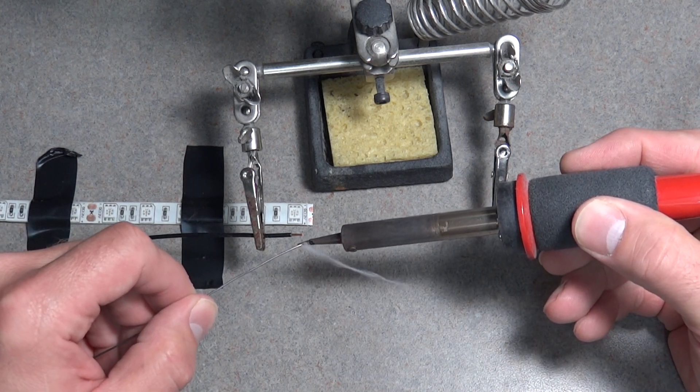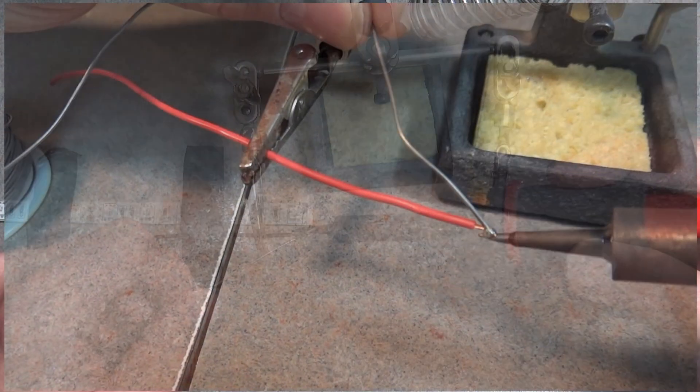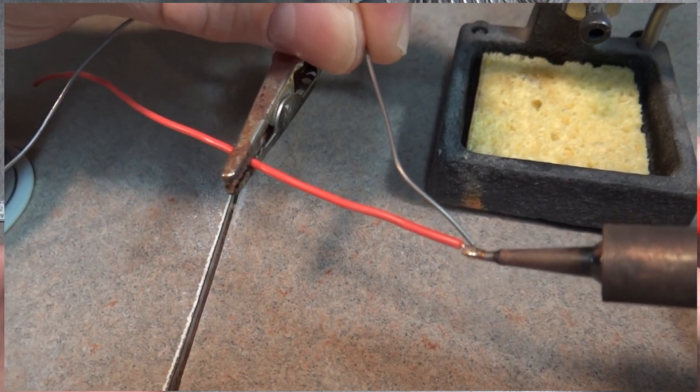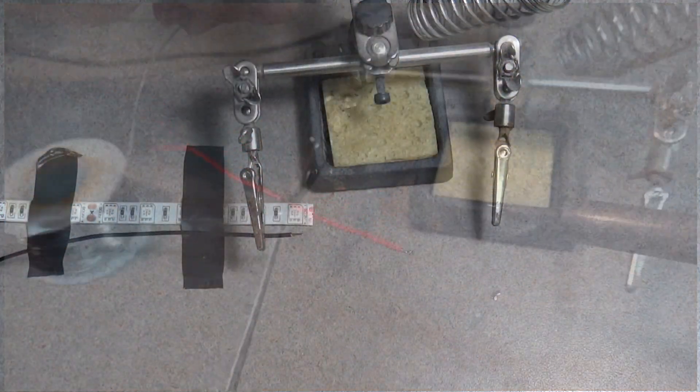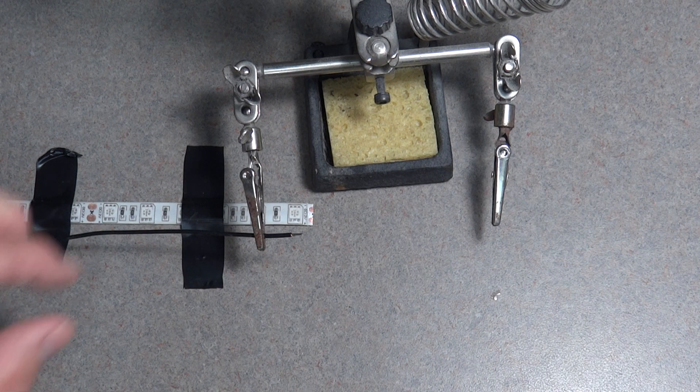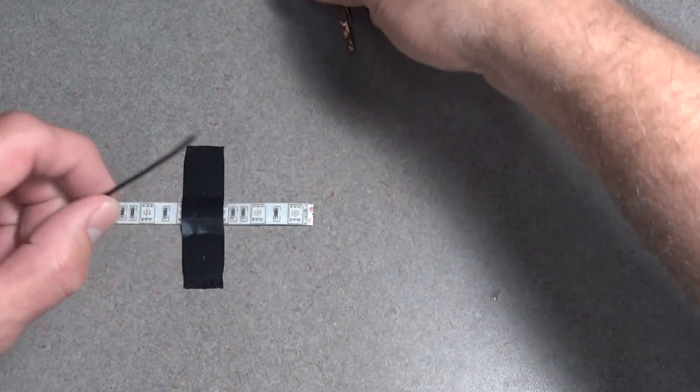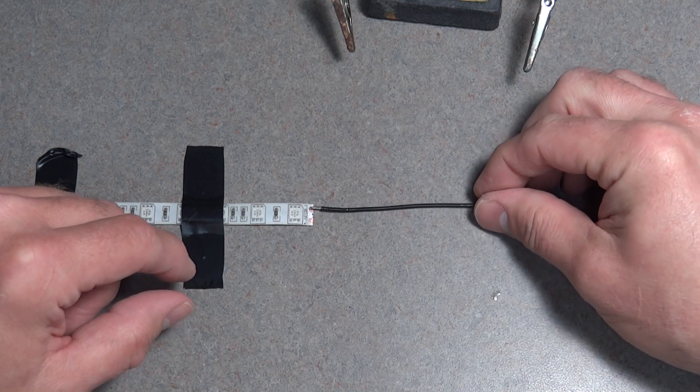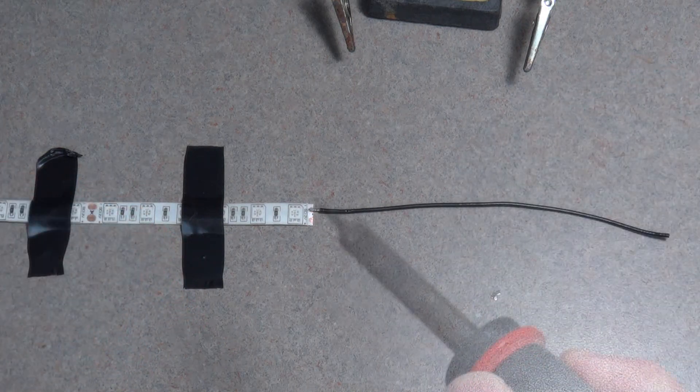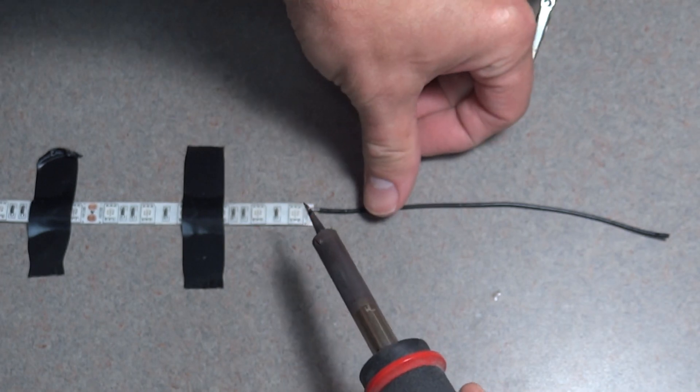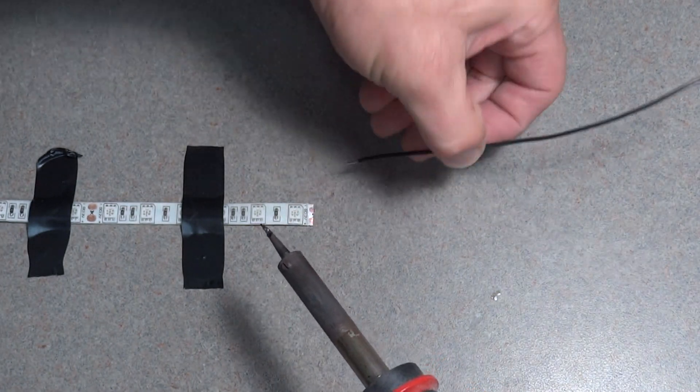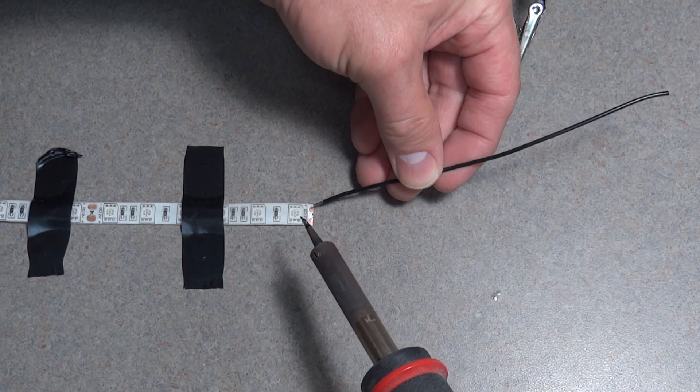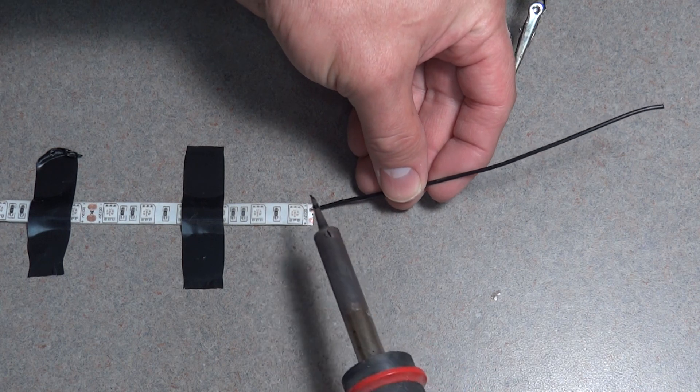I'm going to get some solder on the copper first, so that it actually sucks it up. Now that we've got some on there, I'm going to pull this away, and I'm going to put this in that area there, and we are going to solder that down there like that.